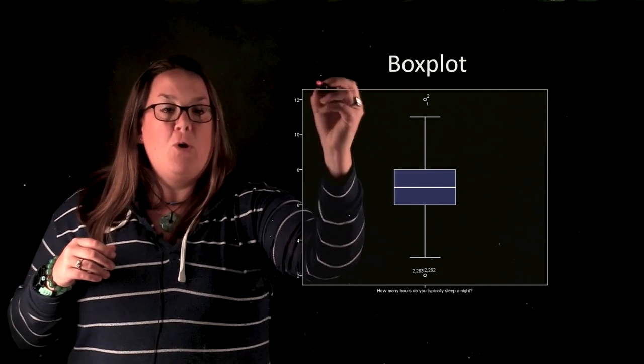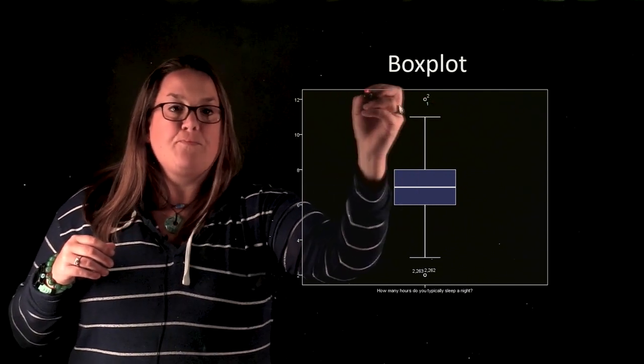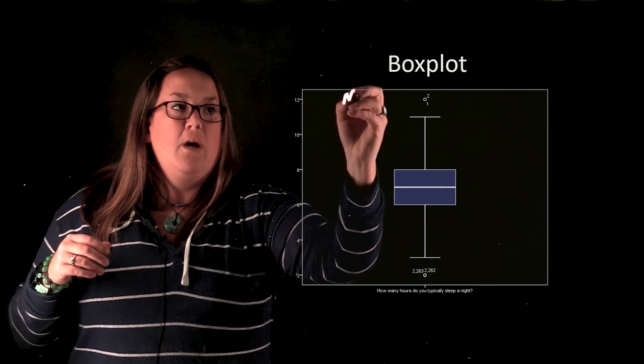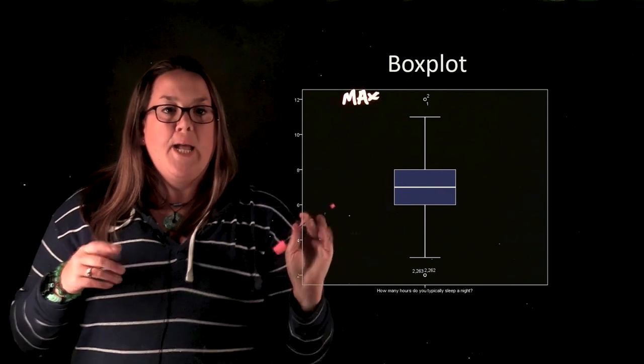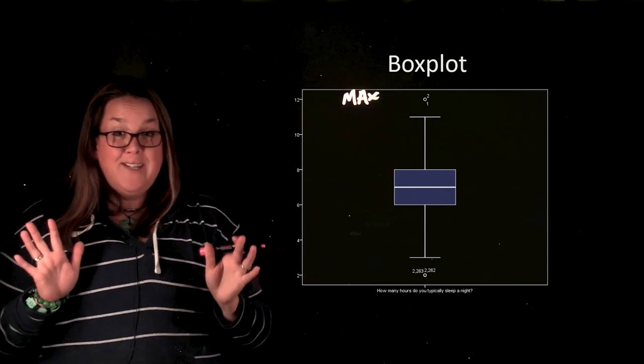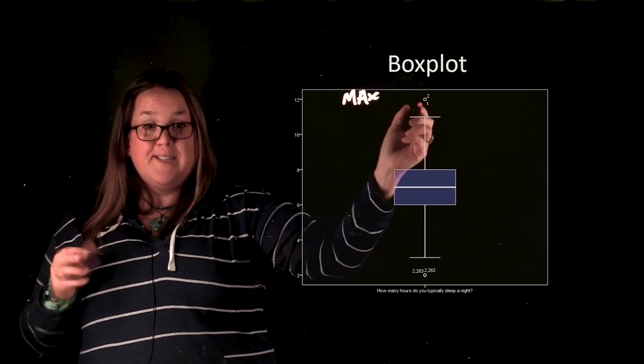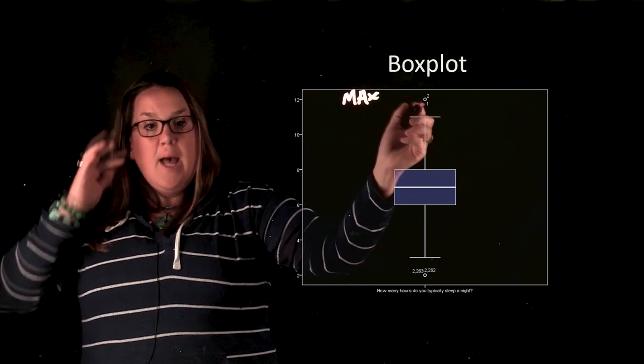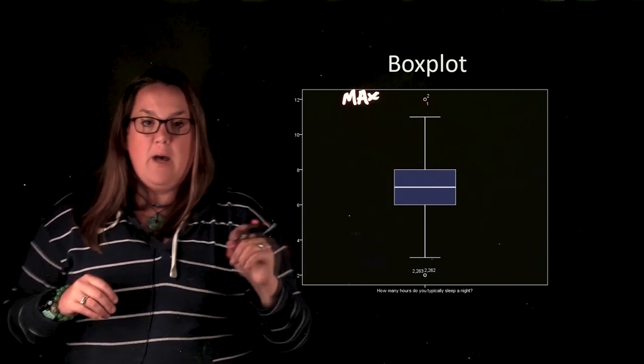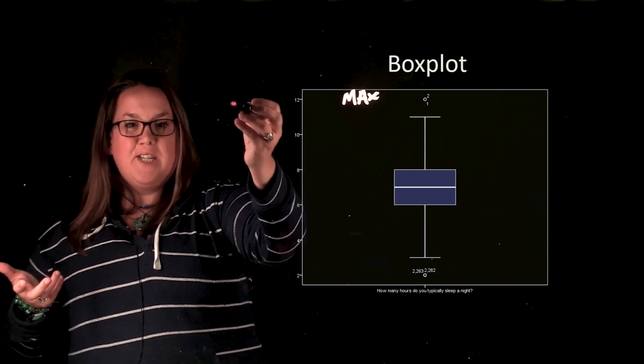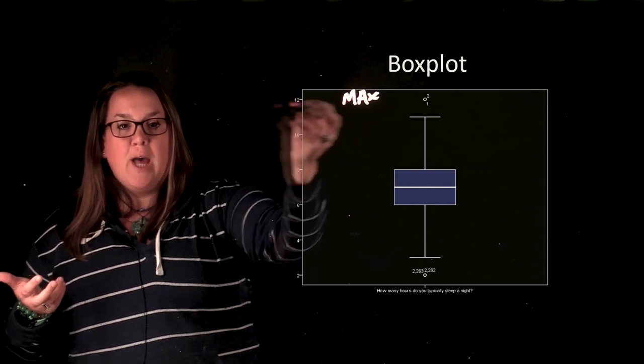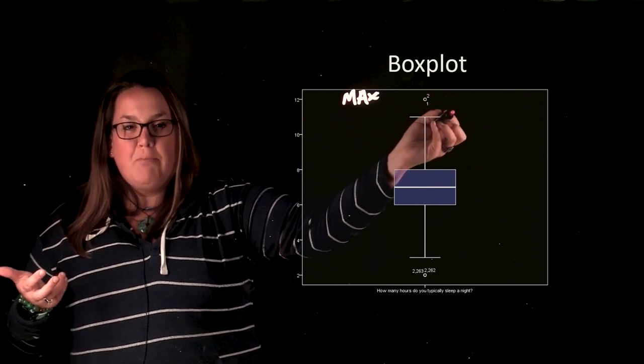So up here, this top number or this maximum number is going to be our max. Now, one comment about that, and this is really kind of weird. This is what we call an outlier, right? Because it's outside of the data. And you see a one by it and a two by it. That's kind of confusing, right? Because over here, you can see that that's 12 hours of sleep per night. So what does the one and two represent?